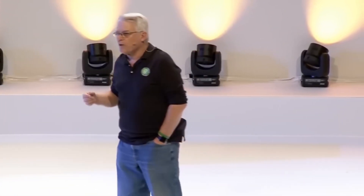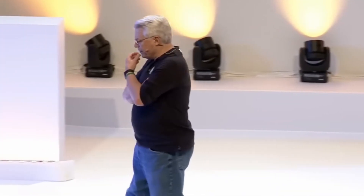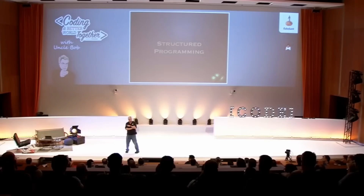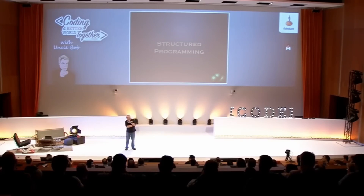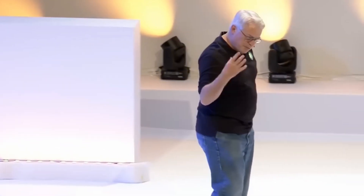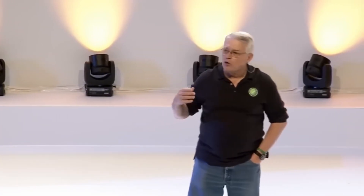He began to work through the mechanics of how you prove software correct, and the mechanics were fascinating. What he discovered was that you could write a simple proof for any two sequential lines, a slightly more complicated proof for an if-statement, and to prove a loop correct, you had to use induction. But bit by bit, he was able to build up a simple structure of mathematical proof.